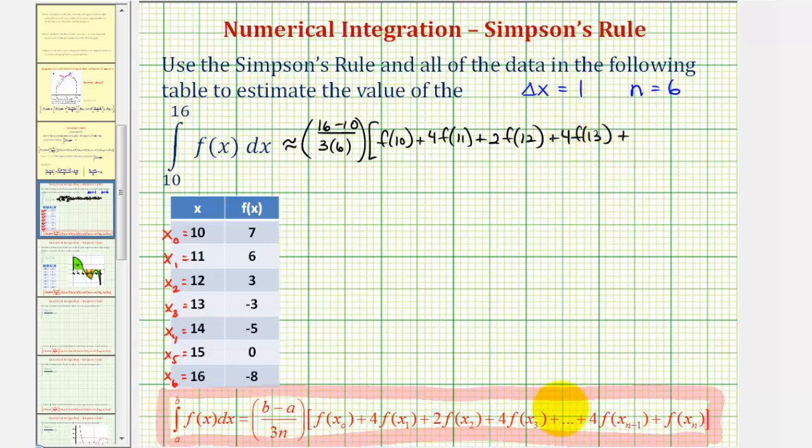Plus two times f of x sub four, which is f of fourteen, plus four times f of x sub five, which is fifteen, and then finally our last x value is x sub six, so it's going to be just plus f of x sub six, or f of sixteen.